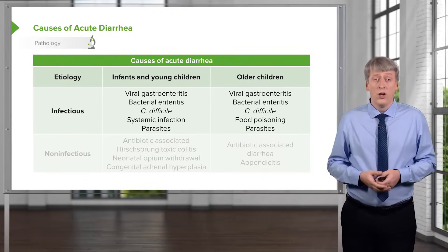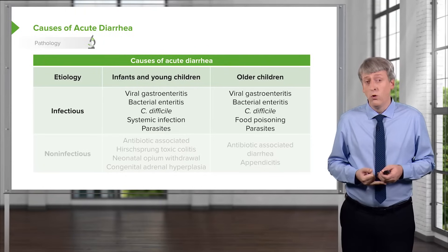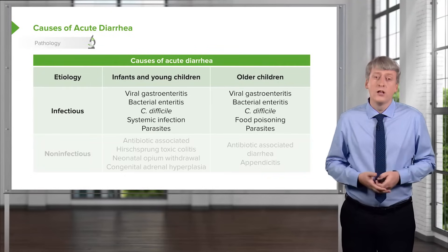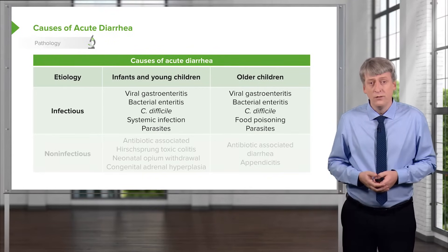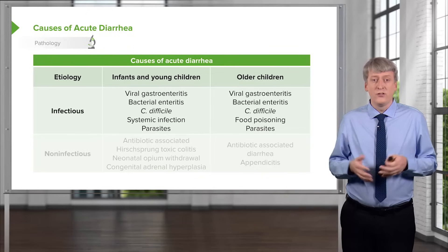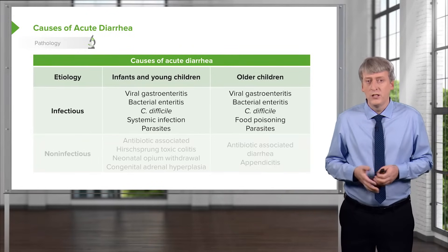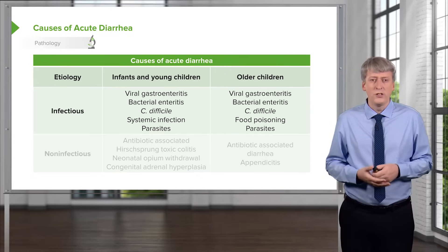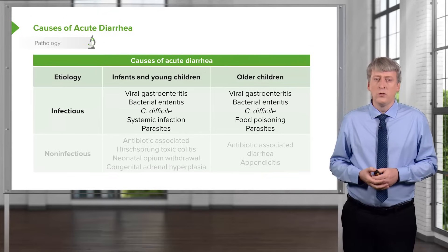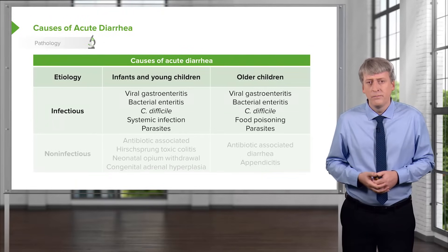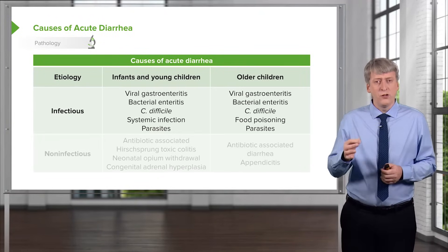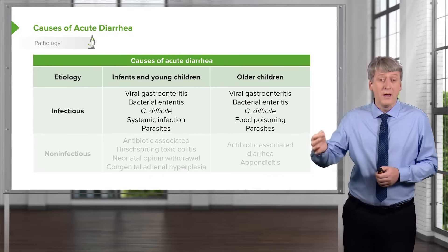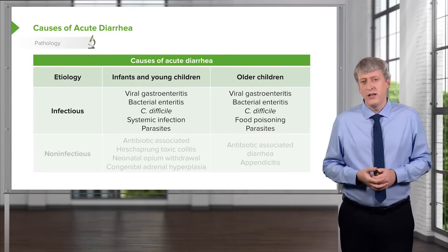Bacterial etiologies are not uncommon. We see Campylobacter, E. coli, Salmonella, Shigella, even Yersinia — and all of these can cause bloody stools. In patients who have been exposed to antibiotics, you may see C. difficile. There may be systemic infections causing children to have acute diarrhea, especially younger children. Parasites are possible, although more common in developing countries. In older children, you may see food poisoning, which involves ingestion of a preformed toxin rather than the actual bacteria, and more commonly patients have vomiting as well.